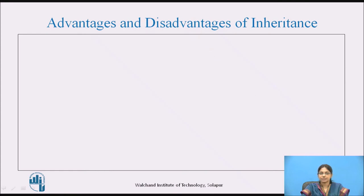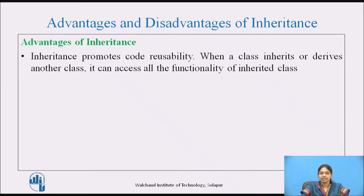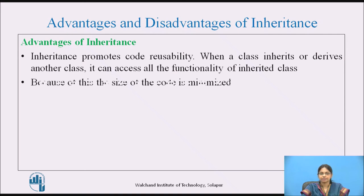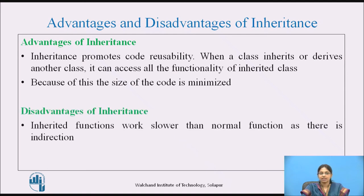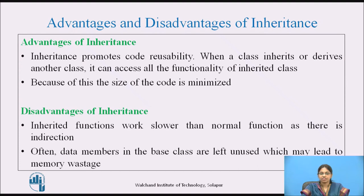Advantages and disadvantages of inheritance. Inheritance promotes code reusability — when a class inherits or derives another class, it can access all the functionality of the inherited class, and because of this the size of the code is minimized. The disadvantages: inheritance functions work slower than normal functions as there is indirection, and often data members in the base class are left unused, which may lead to memory wastage.